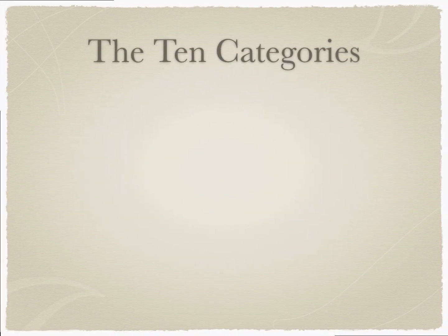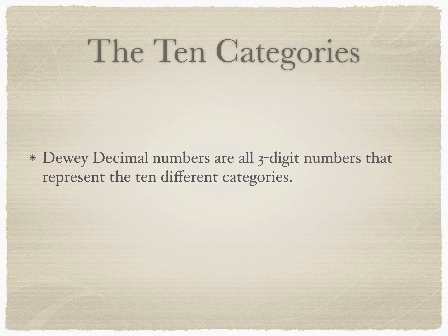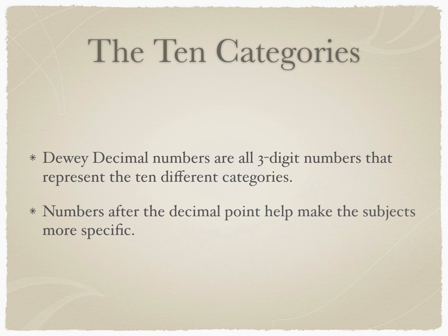The Ten Categories. Dewey Decimal Numbers are all three-digit numbers that represent the ten different categories. Numbers after the decimal point help make the subjects more specific.